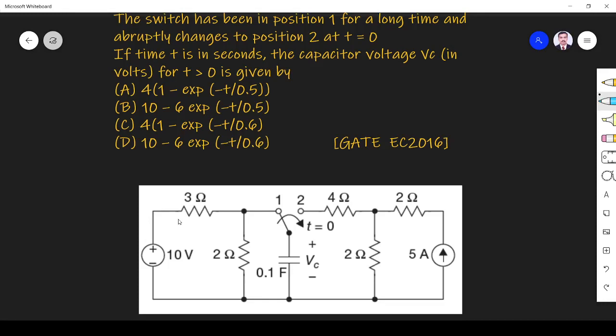The switch has been in position 1 for a long time and abruptly changes to position 2 at t equals 0. If time t is in seconds,